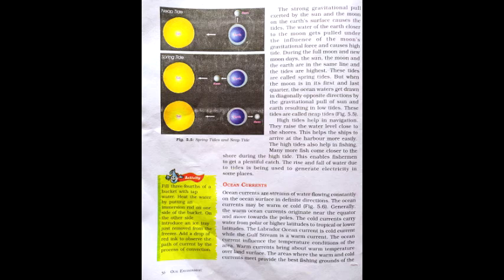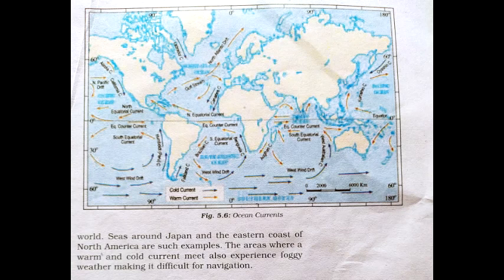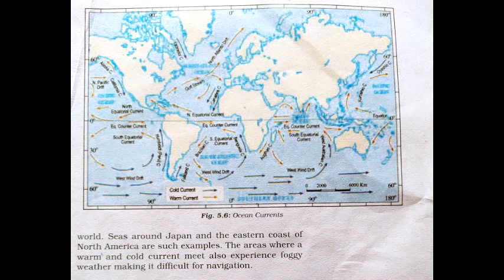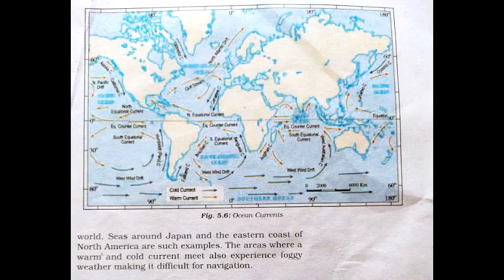The ocean currents influence the temperature conditions of the area. Warm currents bring about warm temperature over land surface. The areas where the warm and cold currents meet provide the best fishing grounds of the world, for example, seas around Japan and the eastern coast of North America. The areas where warm and cold currents meet also experience foggy weather and therefore navigation becomes difficult.